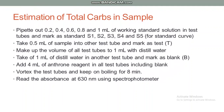For measurement or estimation of total carbohydrates in our sample, pipette out 0.2, 0.4, 0.6, 0.8, and 1 ml of working standard solution into test tubes and mark as standards S1, S2, S3, and so on. These will be used to make a standard graph. Take 0.5 ml of the sample in another test tube and mark as T, which is the test sample or unknown concentration solution. Make up the volume of all test tubes to 1 ml with distilled water. Take 1 ml of distilled water in another test tube and mark as blank, which contains zero concentration of glucose.